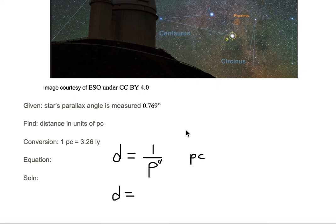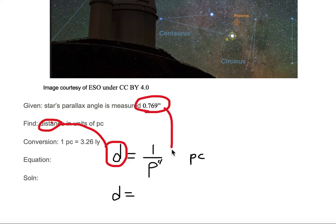So we just need to identify the values. In this case, distance is what we're trying to find, and we can identify that as the letter d in the equation. We're given 0.769 arc seconds, and we can identify that as the angle p.